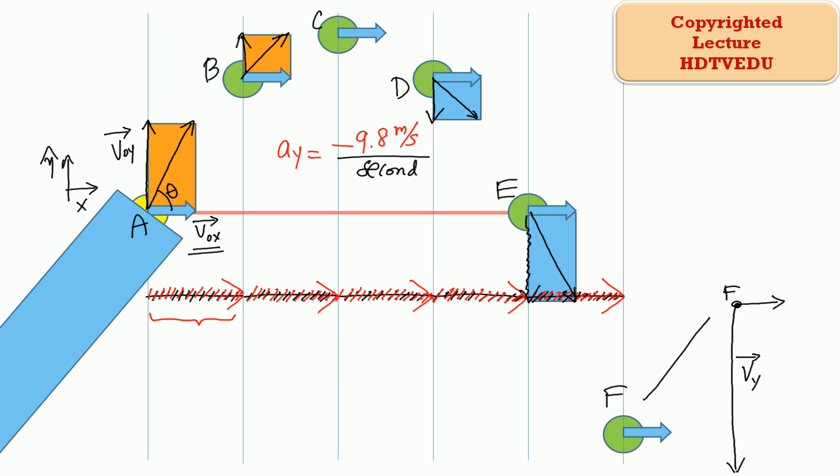At point F, assuming it is one second after point E, the vertical velocity will be negative 9.8 more than at point E. So at point C the vertical velocity equals 0. At points D, E, and F the vertical component of the velocity vector points down, and on the way down from C through D, E, F the velocity vector keeps increasing in magnitude.